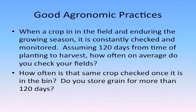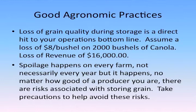When a crop's in the field, we're constantly checking it — whether it's a producer, an ag retailer, or an agronomist — 120 days on average from the time you plant it until you take it off. How many times do you check your fields? When that same crop is in the bin, how many times do you check it, and do you store it for more than 120 days? Loss of grain quality during storage is a direct hit to your bottom line. If you lose 2,000 bushels of canola at $8 a bushel, that's $18,000 that was there and is no longer there. Spoilage happens on every farm, not necessarily every year, but it does happen.